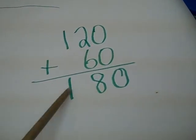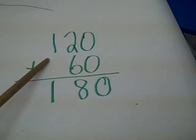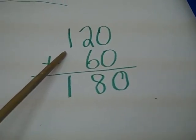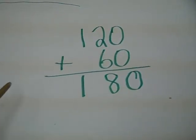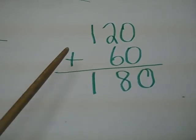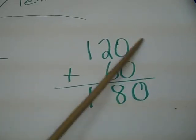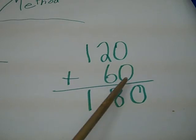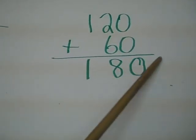Then you choose whatever ones that add up to 12, and then you circle those two numbers, and then you add 120 to 60, and you get 180, which is the answer.